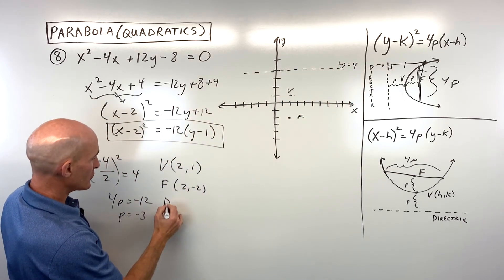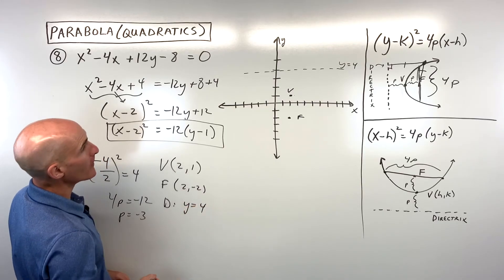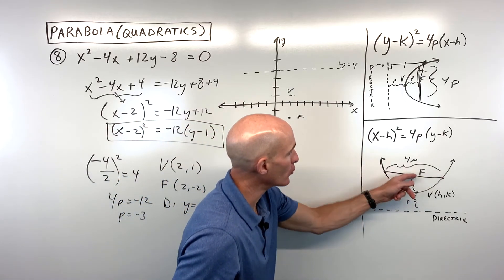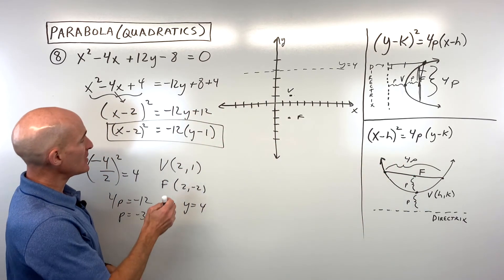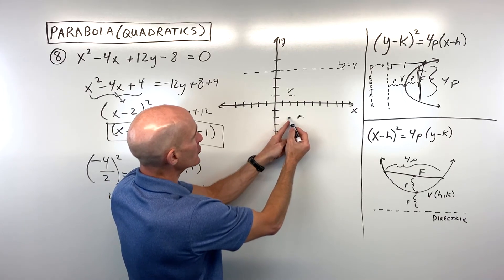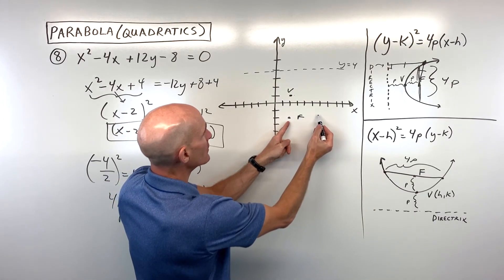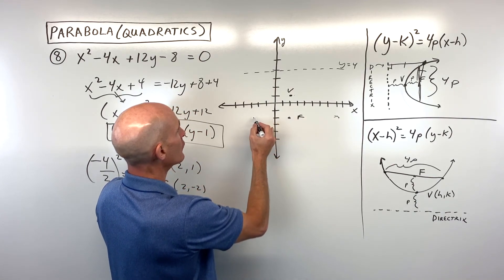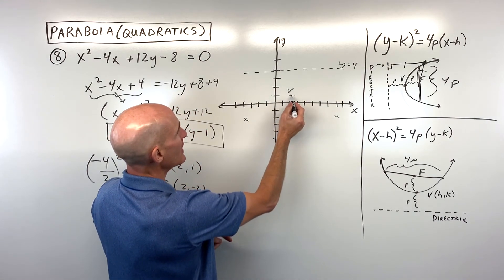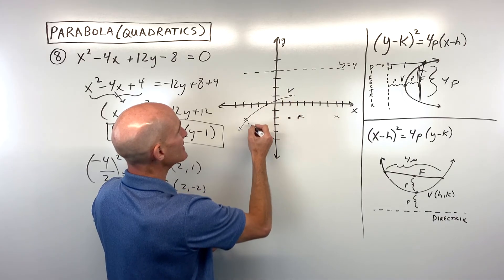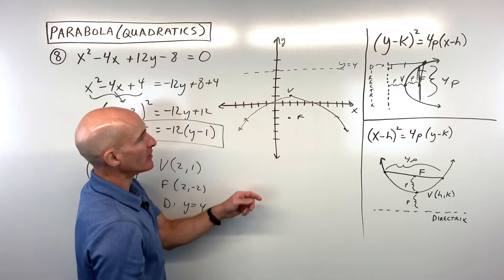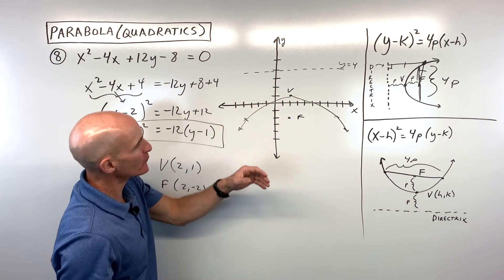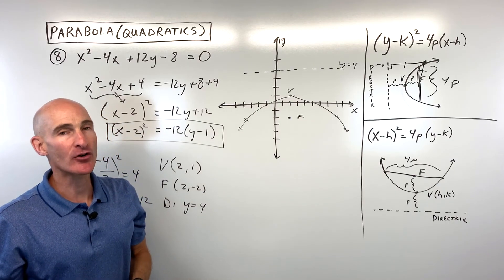At the level of the focus, the focal chord is 4p wide, which is 12. Half of 12 is 6, so going 6 to the right and 6 to the left of the focus gives two key points on the parabola. This gives us a rough idea of how wide the parabola is and a pretty good sketch of our graph.